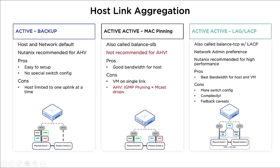The consequence of active-active MAC pinning is that VMs are on a single link — if we lose that link we lose the connection to the virtual machines on that adapter. Similarly, if we lose the other network adapter, we lose the connection to the hypervisor and CVM. For active-active with LAG and LACP, we balance traffic between the two network adapters, and if we lose one adapter we still have the other available to forward traffic.